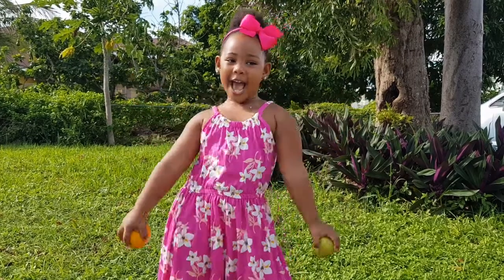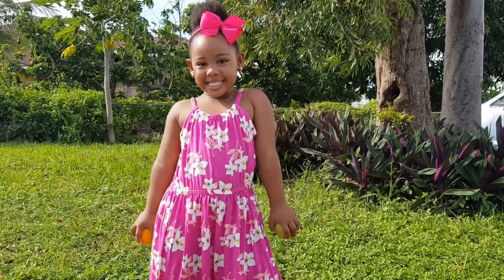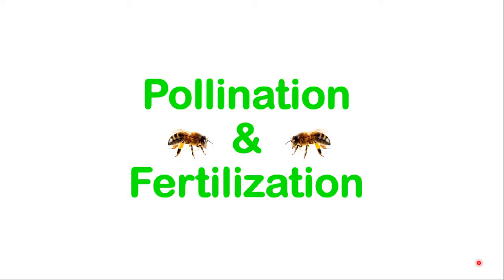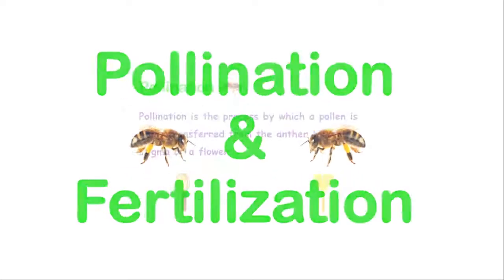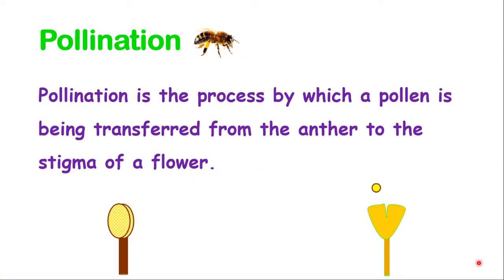You have heard from the little princess that pollination helps to give us fruits and make us cute. Let us define pollination. Pollination is a process by which a pollen is being transferred from the anther to the stigma of a flower.